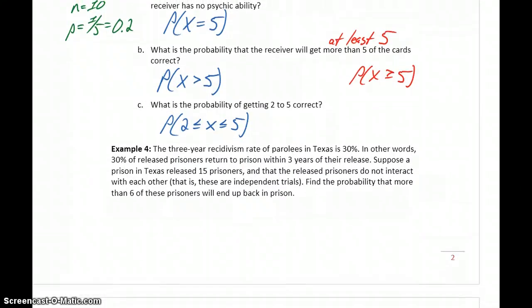In our fourth example, we're told the three-year recidivism rate of parolees in Texas is 30%, meaning 30% of released prisoners return to jail or prison. Suppose a prison in Texas released 15 prisoners, and that the released prisoners don't interact with each other. So that's how we're getting around this idea of independent trial. So a little bit of an assumption built into the problem there.